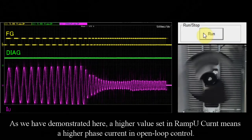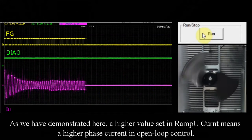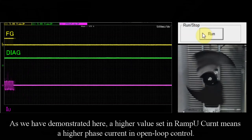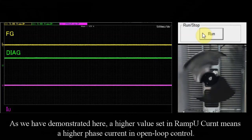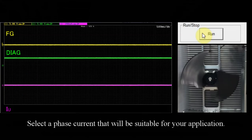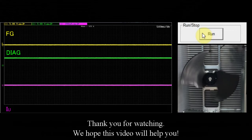As we have demonstrated here, a higher value set in ramp up current means a higher phase current in open loop control. Select a phase current that will be suitable for your application. Thank you for watching. We hope this video will help you.